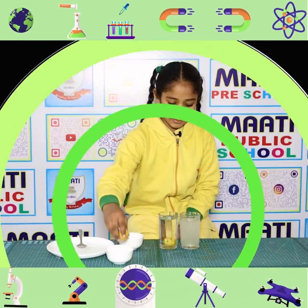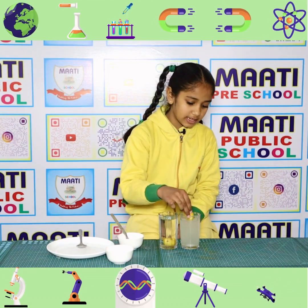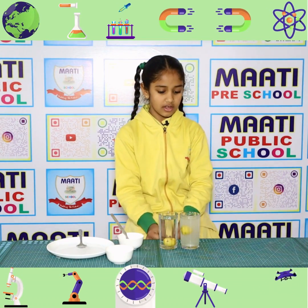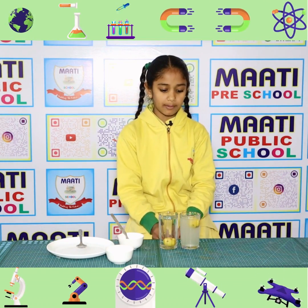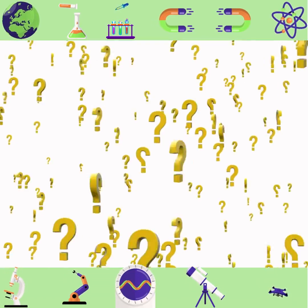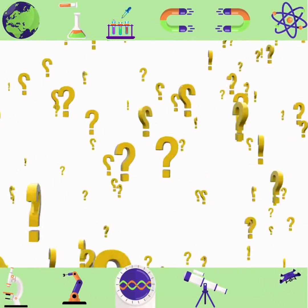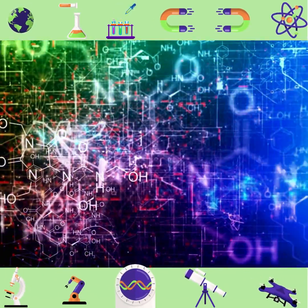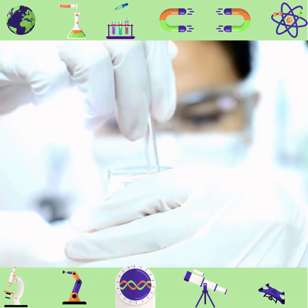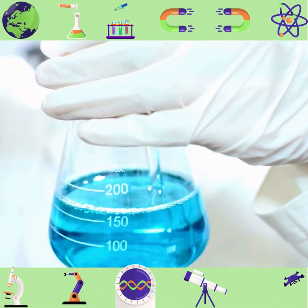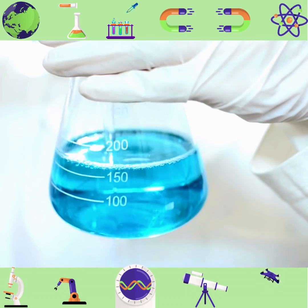Put a lemon in this glass. What we see — the lemon floats in this glass. This experiment shows that the object which has less density than water floats in it. Thank you!